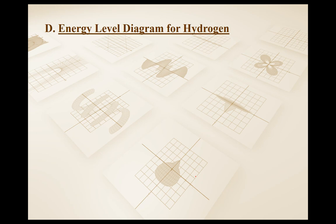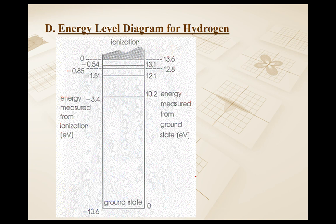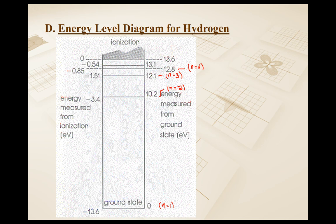Here is an energy level diagram for hydrogen, and we're going to look at it from two perspectives. One perspective is an energy level diagram like we drew before, where the ground state is where you say you have no energy — N equals 1. Then N equals 2, N equals 3, N equals 4, N equals 5, and 13.6 electron volts would be the ionization energy, so that's N equals infinity.